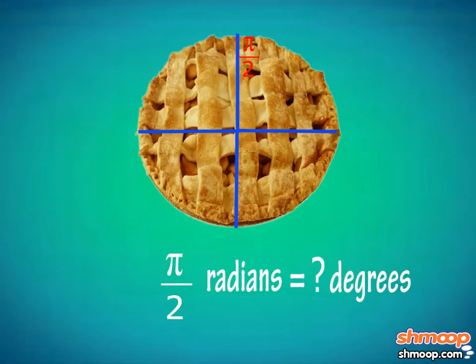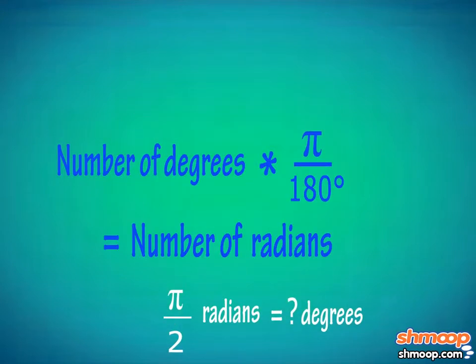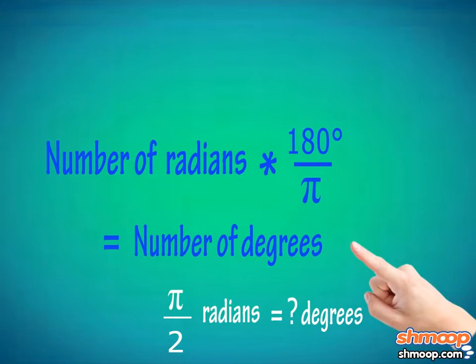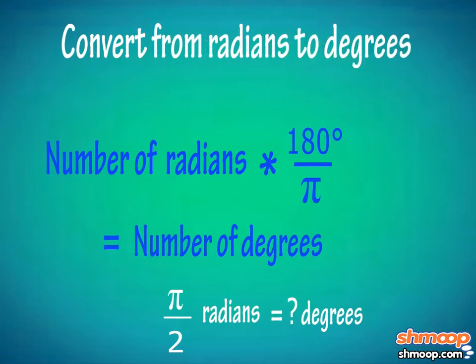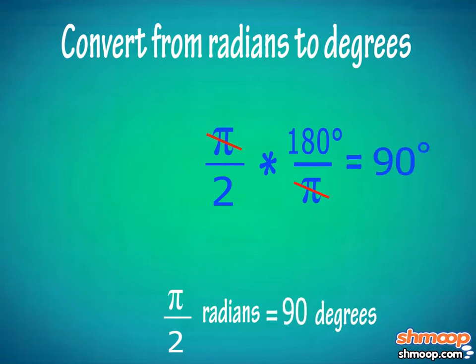Well, if the number of degrees multiplied by π over 180 gives you the number of radians, then what if we flip the fraction around to get from radians to degrees? The formula that Tommy uses to convert from radians to degrees is the number of radians multiplied by 180 over π equals number of degrees. So in the equation π over 2 times 180 over π, the π in the numerator and the π in the denominator cancel out, and 180 divided by 2 gives you 90 degrees.